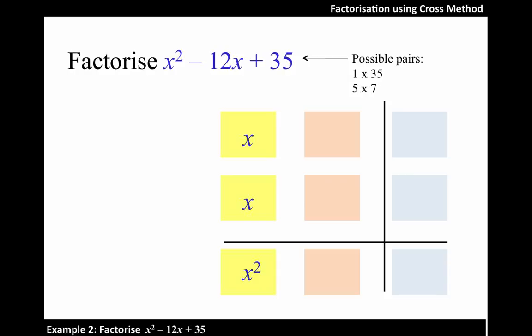Let's look at the middle term. We have 12. So which pair of factors is likely to result in 12? 5 and 7.